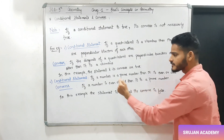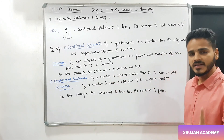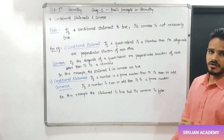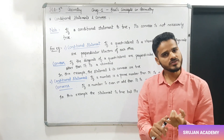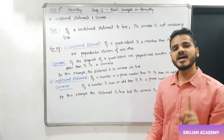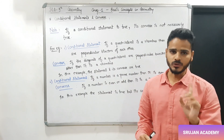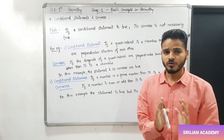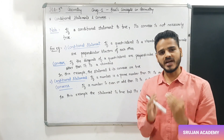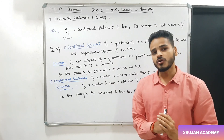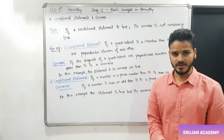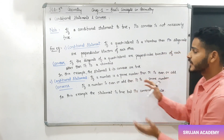Second example देखो. If a number is prime, then it is even or odd. देखो — prime number even भी हो सकता है, odd भी हो सकता है. दुनिया में एक ही ऐसा prime number है जो even है — वो है two. Prime number वो number होता है जिसके only दो divisors आते हैं — खुद और 1. तो prime number even भी रह सकता है, odd भी हो सकता है. यह हुआ conditional.